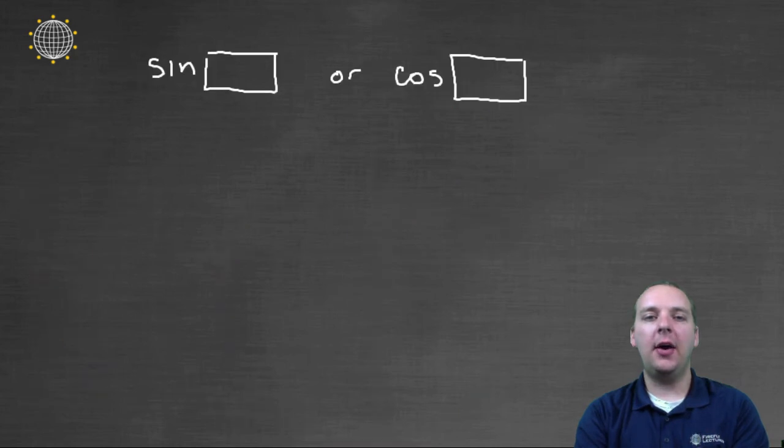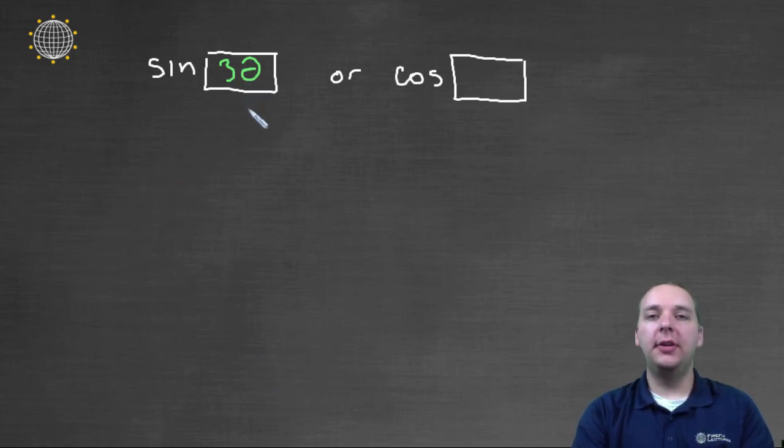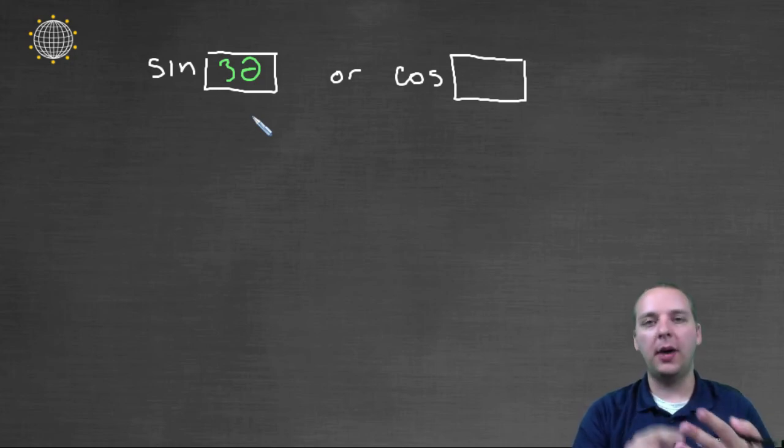But let's consider now when you have sine or cosine of something else. For example, and I'll just make an example up here. Let's say we had three theta instead of just a theta. Well, then you have to be careful. The thetas you would choose for your table would not be zero, pi over two, pi, et cetera. So here's what you have to do.